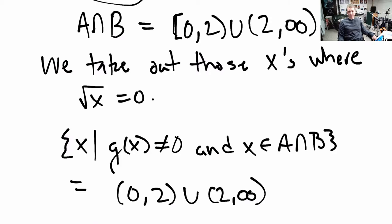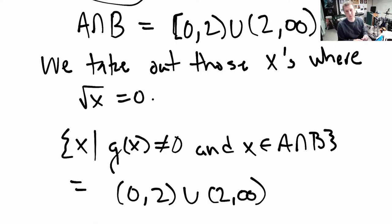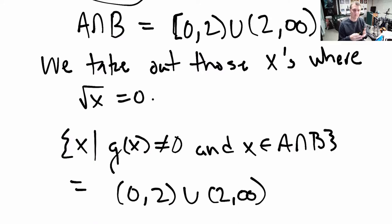That's the basic process for finding the domain of any product, quotient, sum, or difference of two functions. You find the domains of each individually, look at where they overlap — the intersection — and in the case of quotients, also find where the denominator is zero and remove those from the intersection.